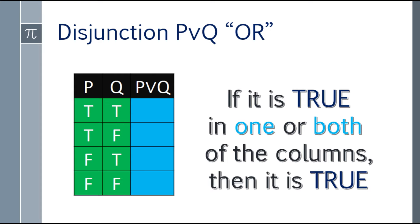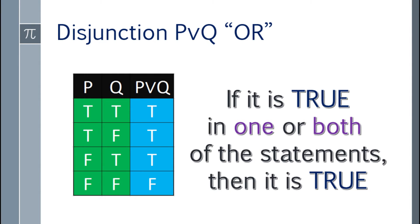So let's answer it. First row: P is true, Q is true — so that's true. Second row: true as well. Third row: even if the first is false, there's one true — so true. For the fourth row, the answer is false because there is no true. We need at least one true to get a true answer.